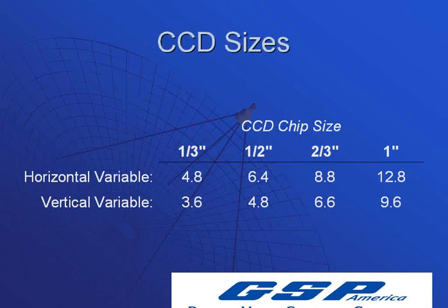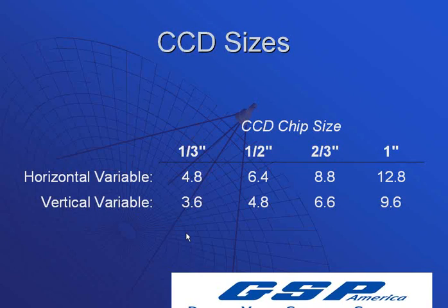Part of this calculation is the CCD chip size. You're going to have a lot of different variations in chip sizes and cameras. These are actual physical dimensions — 4.8 millimeters by 3.6 millimeters is the actual dimensions of a 1/3-inch chip. GSP America cameras all have a 1/3-inch chip size, other than our PTZ cameras. So the math that we use is based on the 1/3-inch chip size.